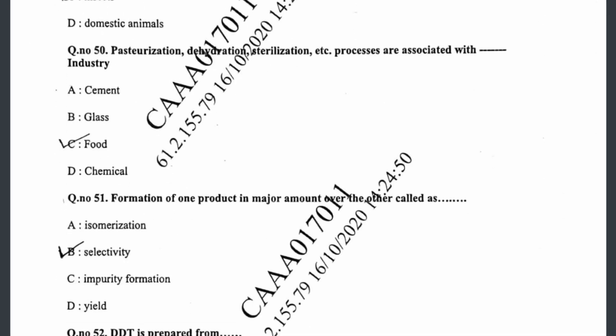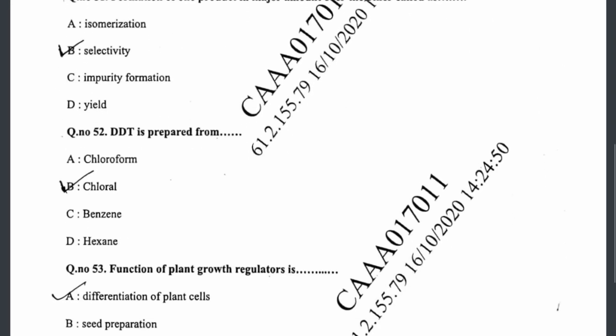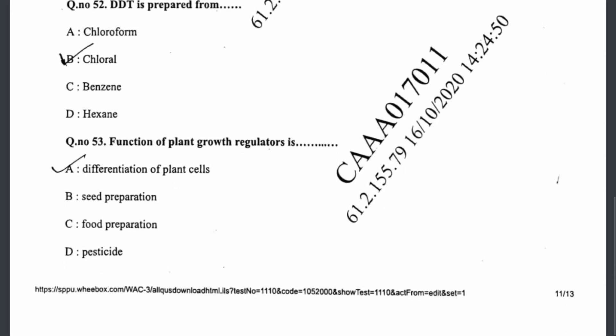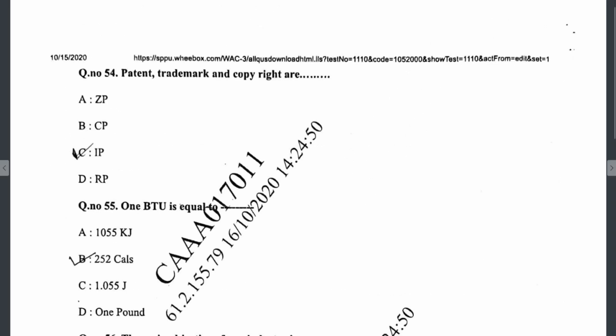Question fifty-one: formation of one product in a major amount over others is called selectivity — that is option B. Question fifty-two: DDT is prepared from chloral — that is option B. Question fifty-three: the function of a plant growth regulator is differentiation of plant cells — that is option A. Question fifty-four: patent, trademark, and copyright are intellectual properties (IP) — that is option C.